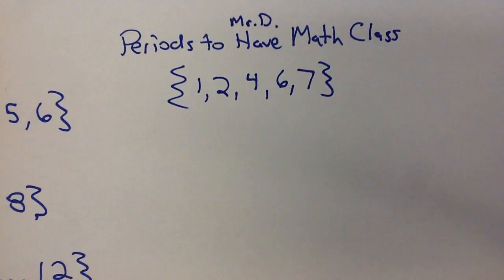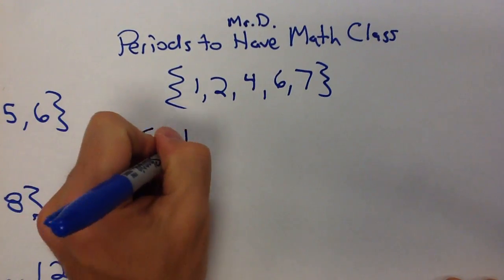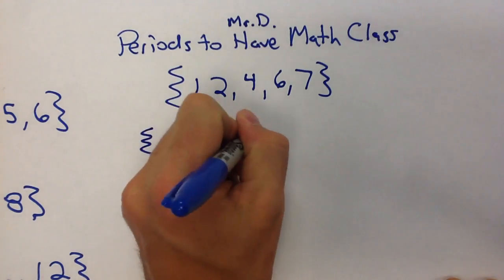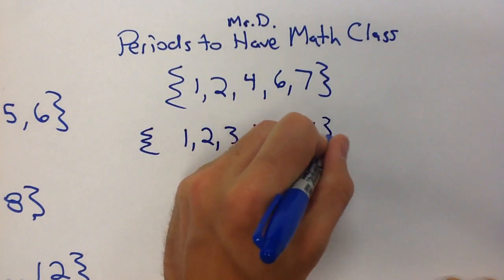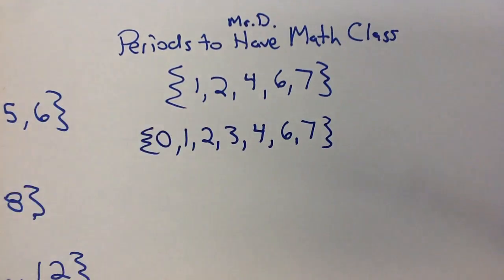That's different than all the periods you could have in math class if you're just any student at the school. If you're any student at the school, you could have first, second, third, fourth, sixth, seventh. In fact, some of you select few could also have a zero period. So that is the sample space for it.